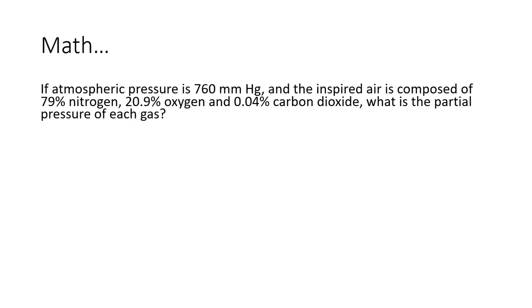All right, so we're going to do some math. If atmospheric pressure is 760 millimeters of mercury, and that's how we generally measure it, and the inspired air is 79% nitrogen, and then we've got these other values for oxygen and carbon dioxide, what is the partial pressure of each gas? So I want you to pause for a minute, see if you can calculate this.